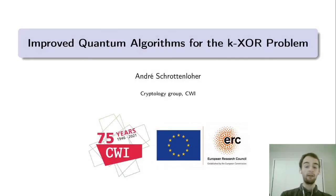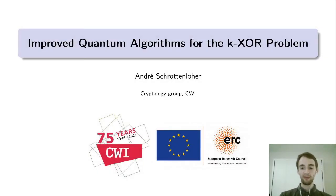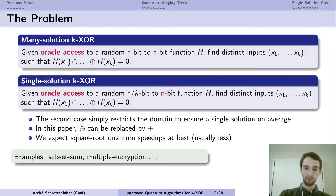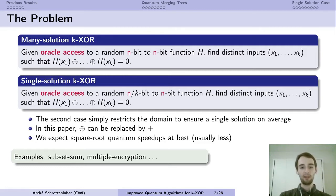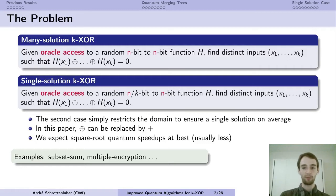Hi everyone, welcome to this presentation about quantum algorithms for the k-XOR problem. We are given access to a random function which produces elements, and we want to find k of these elements that XOR to zero.